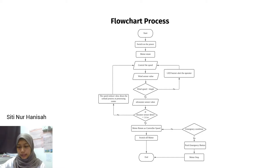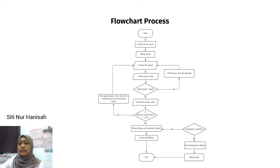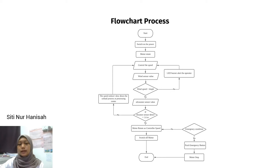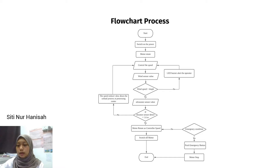This is the flow chart for the process. First, we switch on the power and the motor will rotate. We can control the speed of the motor. If the wind sensor detects wind higher than 4 mph, the LED buzzer will alert the operator to reduce the speed. We also have an ultrasonic sensor — if it detects the basket at 1.6 meters from the processing center, it will reduce the motor speed automatically. If the basket is higher than 1.6 meters, the motor will rotate at the controlled speed. In an emergency condition, we push the emergency button to stop the motor.